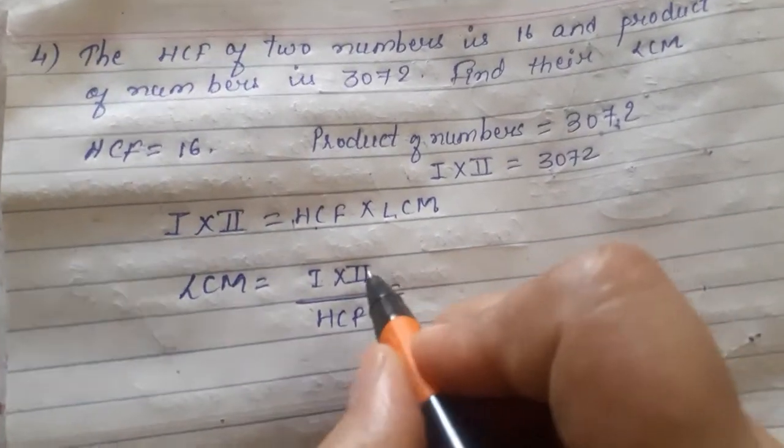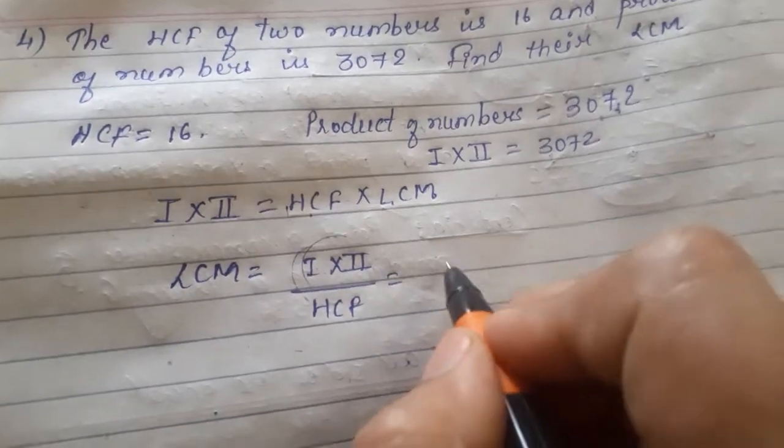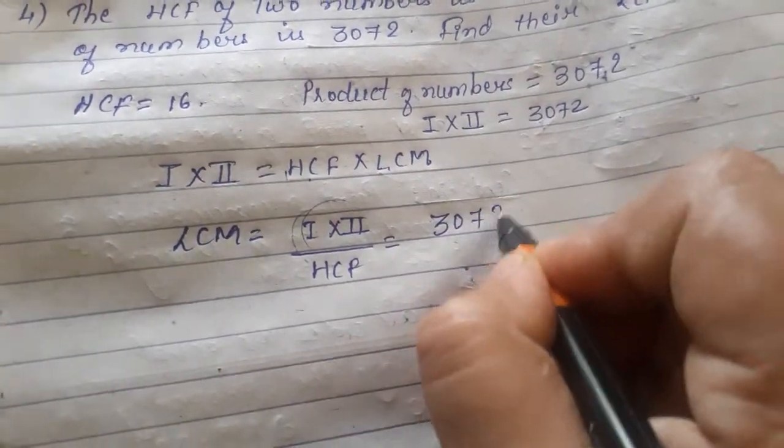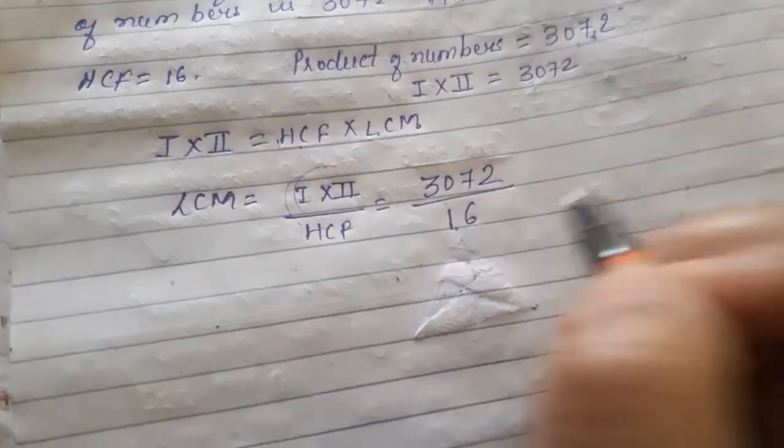First numbers, this is what? What is the product of numbers? So this will give us how much value? 3072 divided by 16. Now how can you do this simplification?